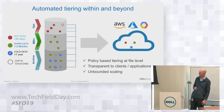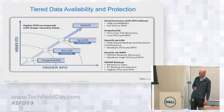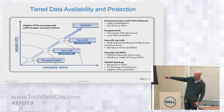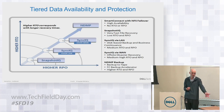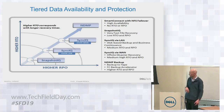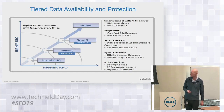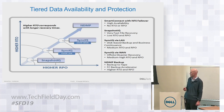On data protection: we've talked about snapshots — the fastest way to achieve RPO and RTO. We can then do SyncIQ locally or over a WAN. We also support technologies like NDMP and plug in with most backup applications — all the standard stuff you'd expect.